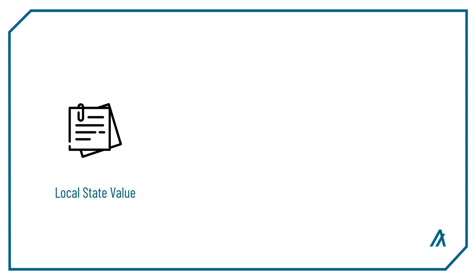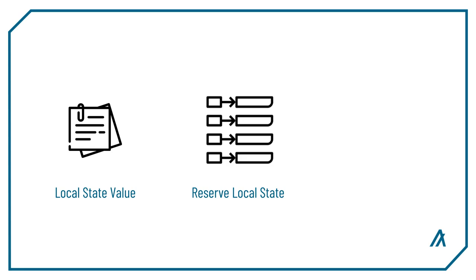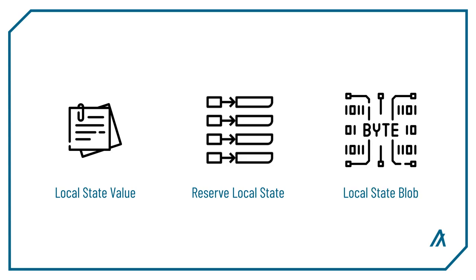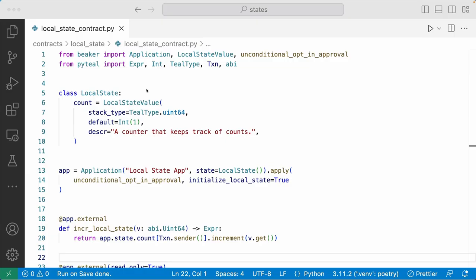Now let's talk about local state. Just like the global state, there are three types of local state: a local state value, a reserved local state, and a local state blob. Defining and using local state is almost identical to defining global state, so I'll go through the code more briefly.